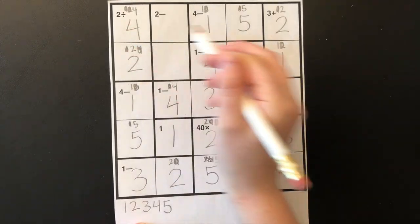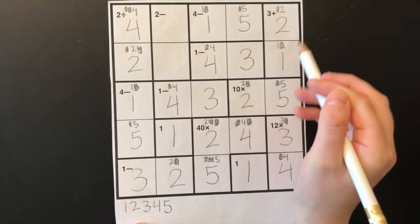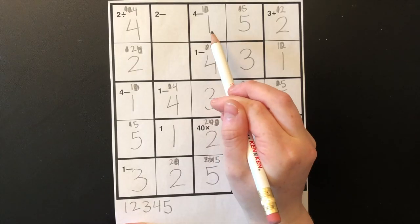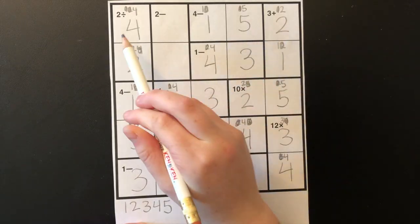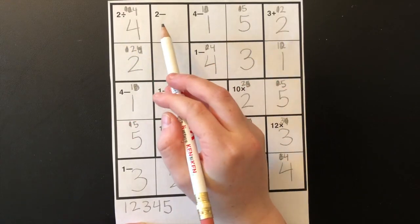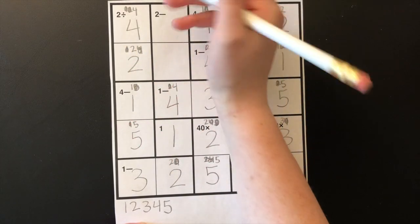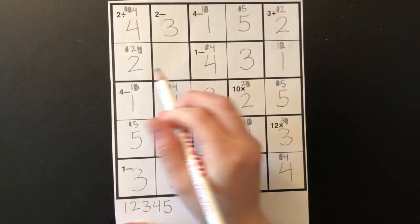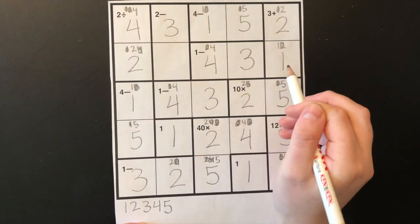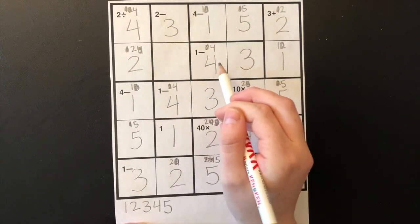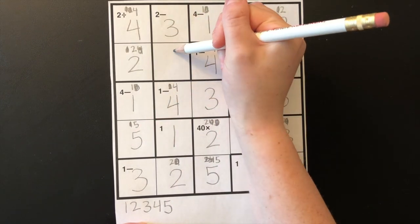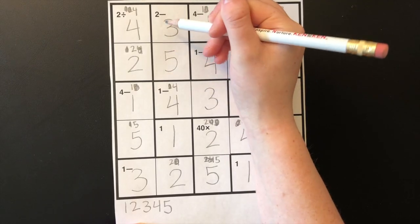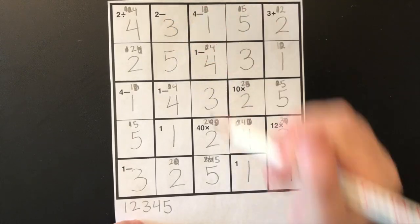Now I'm going to look at these two rows to finish the puzzle. I see one, two, four, and five, so this box has to be a three. And in this row I see one, two, three, and four, so this box is a five, which works out because five minus three equals two.